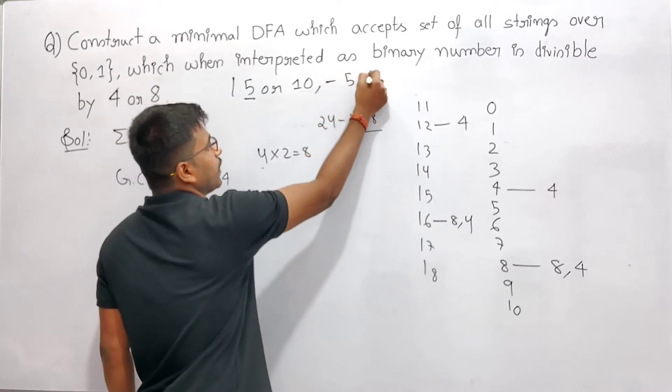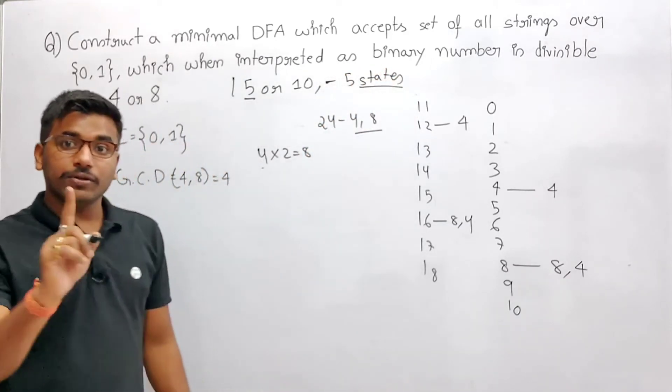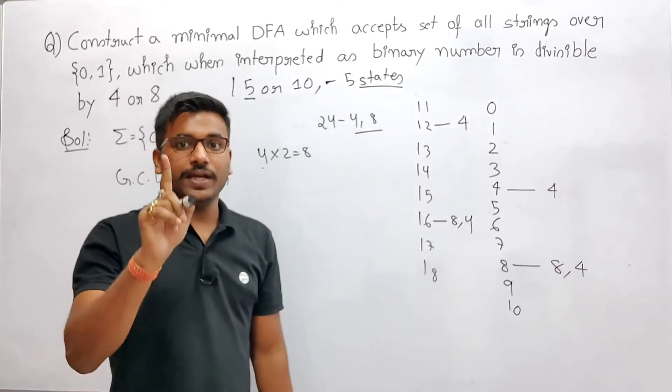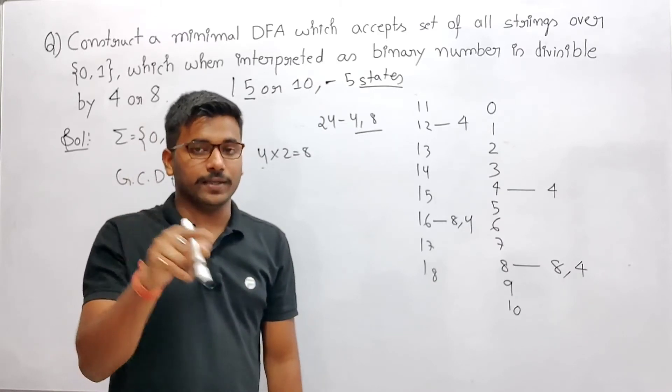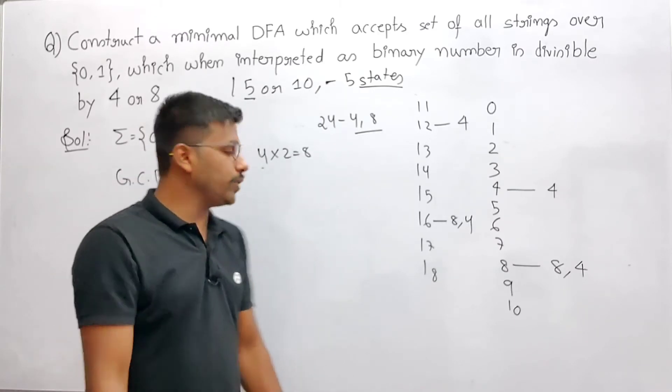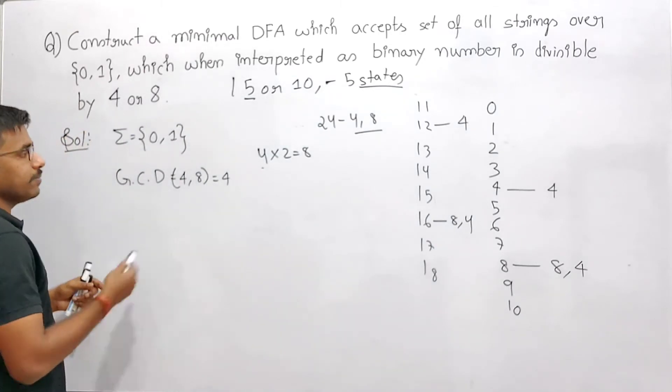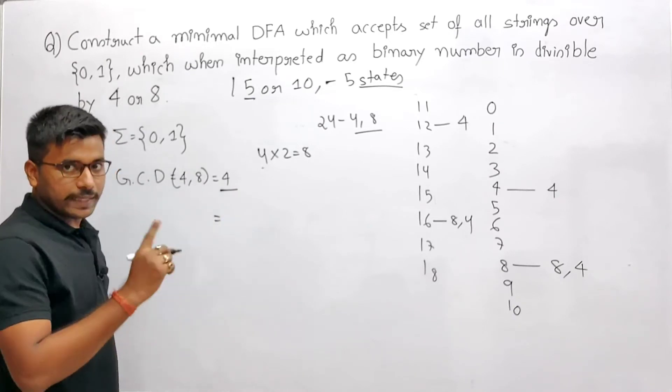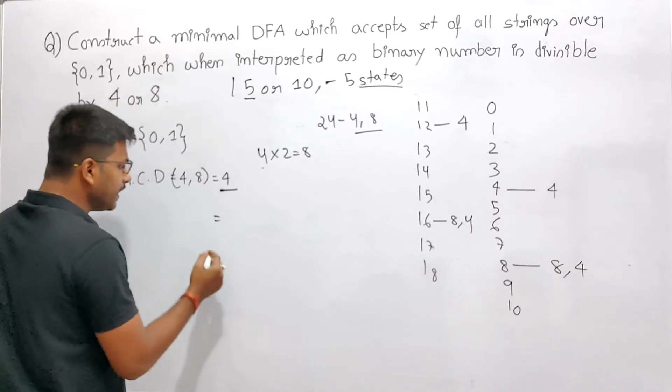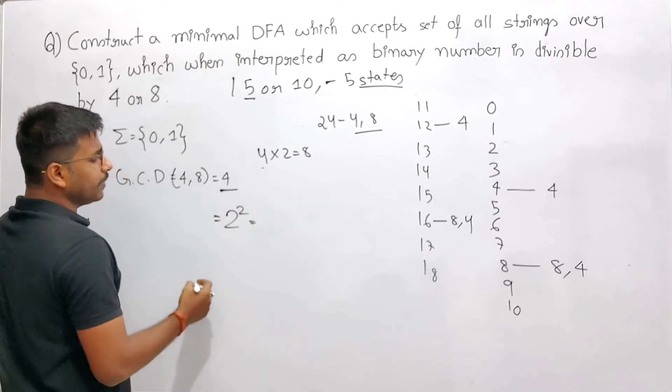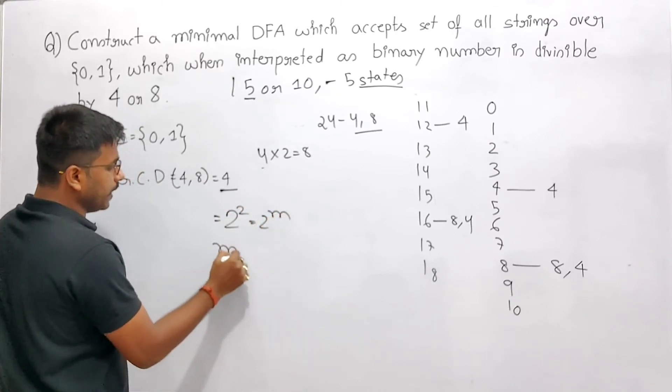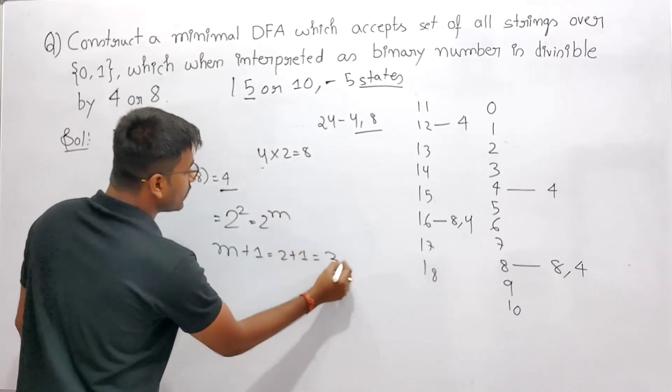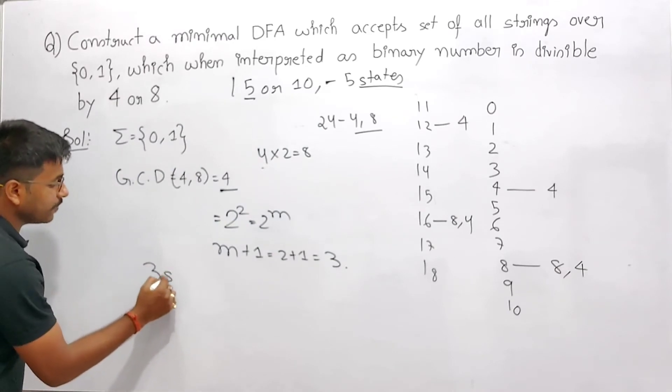So for this you have to construct a minimal DFA which is divisible by 5. You will define 5 states because it's an odd number. Now you can apply the formula because we're constructing for only one number, divisible by only 5, not divisible by 10. In divisible by 5, 10 is also coming. When I'm saying divisible by 4, how many states will require in minimal DFA? You can write it as a power of 2, 2 to the power 2, so it will be 2 to the power n. The minimal number of states will be n plus 1, that is 2 plus 1 is 3. For this question you require 3 states in the minimal DFA.